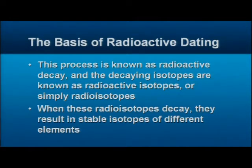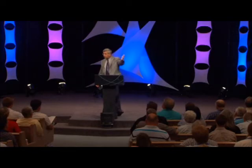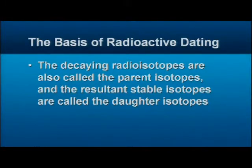When these radioisotopes decay, the end products are stable isotopes of different elements. You go from a parent element to a daughter element. The decaying isotopes are called parent, and the resultant stable isotopes are called daughters. The parent decays and changes to a new element, which is the daughter element.